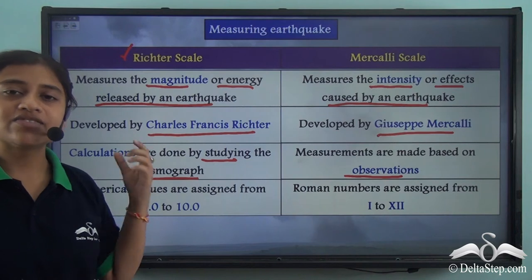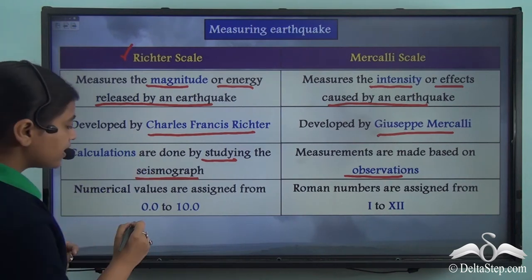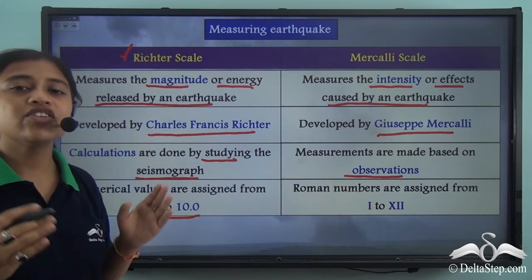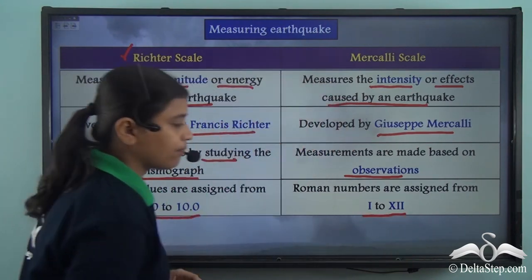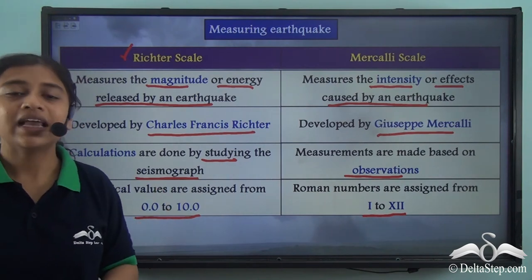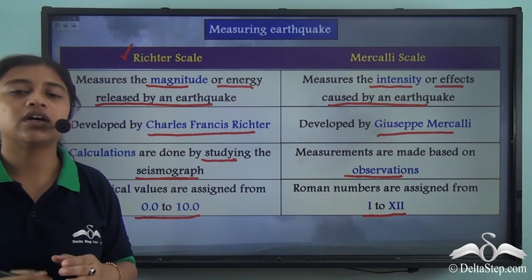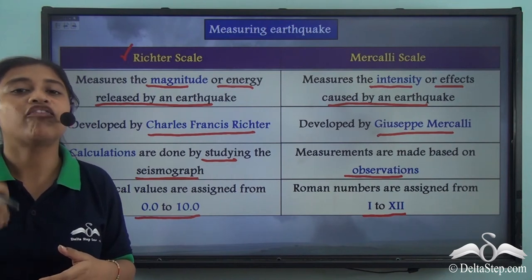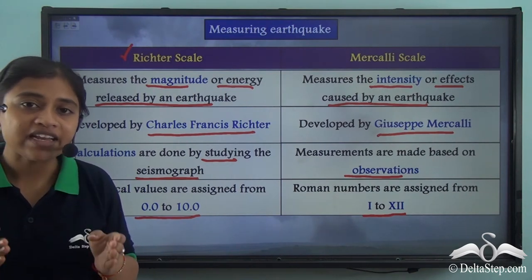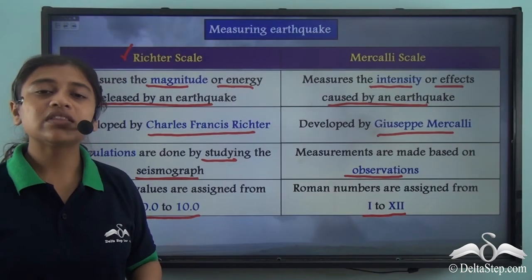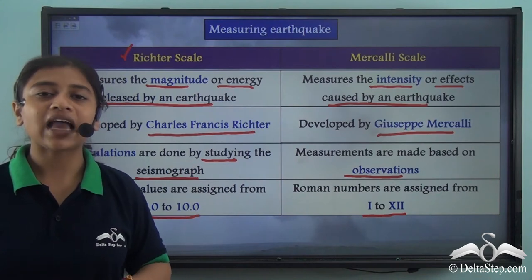On the Richter scale, numerical values are assigned from 0.0 to 10.0, while the Mercalli scale is assigned in Roman numerals from I to XII. If an earthquake is assigned a value less than 7 on the Richter scale, the damage is not that severe. However, a value of more than 7 means the earthquake has been very devastating. A value of 6 or 7 on the Richter scale corresponds to roughly 8 on the Mercalli scale.